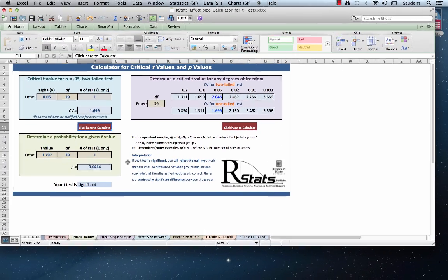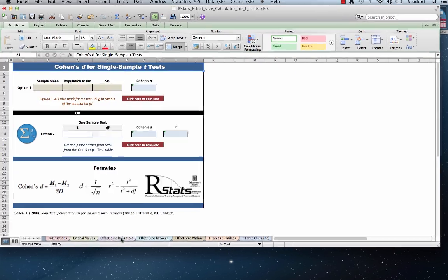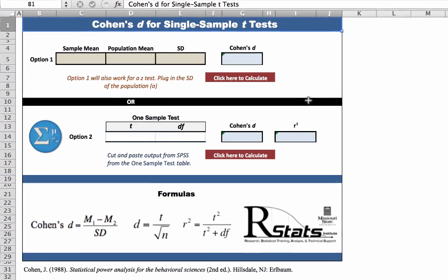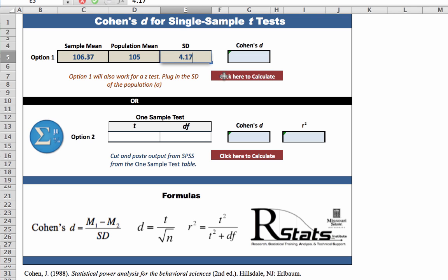Next, you will calculate Cohen's D effect size for your single sample t-test by clicking on the light purple tab for effect single sample. You have two options here. Option number one is to enter the sample mean, 106.37, the population mean, 105, and the standard deviation, 4.17, which you calculated as part of doing the t-test. Click, and Cohen's D is 0.328.